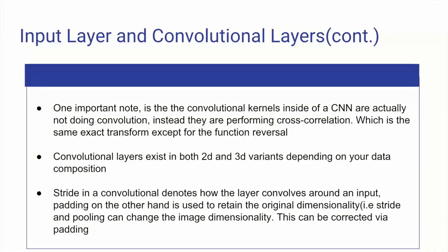So two important things to know about the convolutional layers are stride and padding. These will change your data in subtle ways. So a stride in a convolutional layer just denotes how the layer convolves around an input. And padding will just be used to retain the original dimensionality. So let's say you use a stride of one and a pool of three by three. That is going to reduce your real dimensionality that the neural network is focused on. All padding does is pads out the pixels or, since this is being modeled as a matrix, the cells of a matrix to retain the original dimensionality.